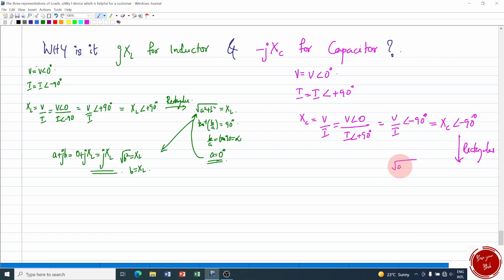Converting into rectangular form you have √(a² + b²) = XC or tan⁻¹(b/a) = -90°. b/a = tan(-90°) which is negative infinity, that is a = 0 and b has a negative value.